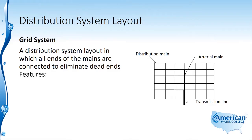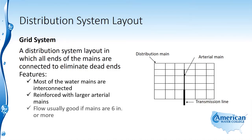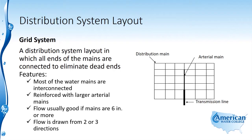Features of the grid system include: most of the water mains are interconnected, the mains are reinforced with larger arterial mains, flow is usually good if the mains are six inches or more, and you'll draw flow from two to three directions.